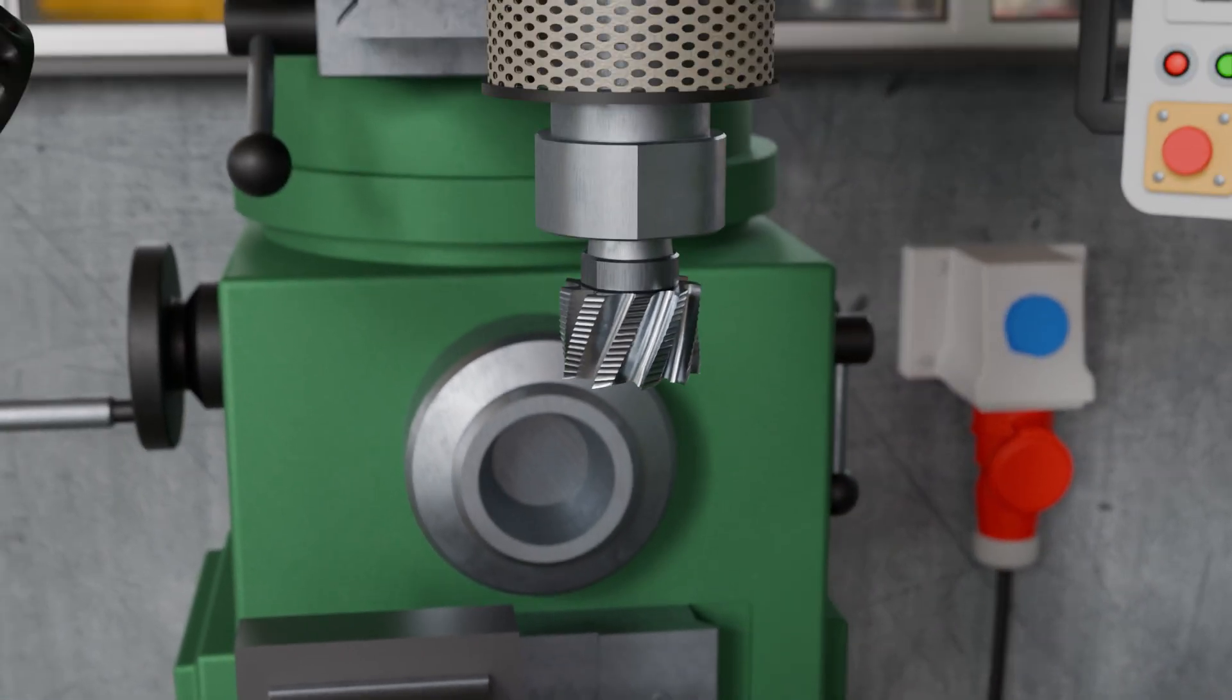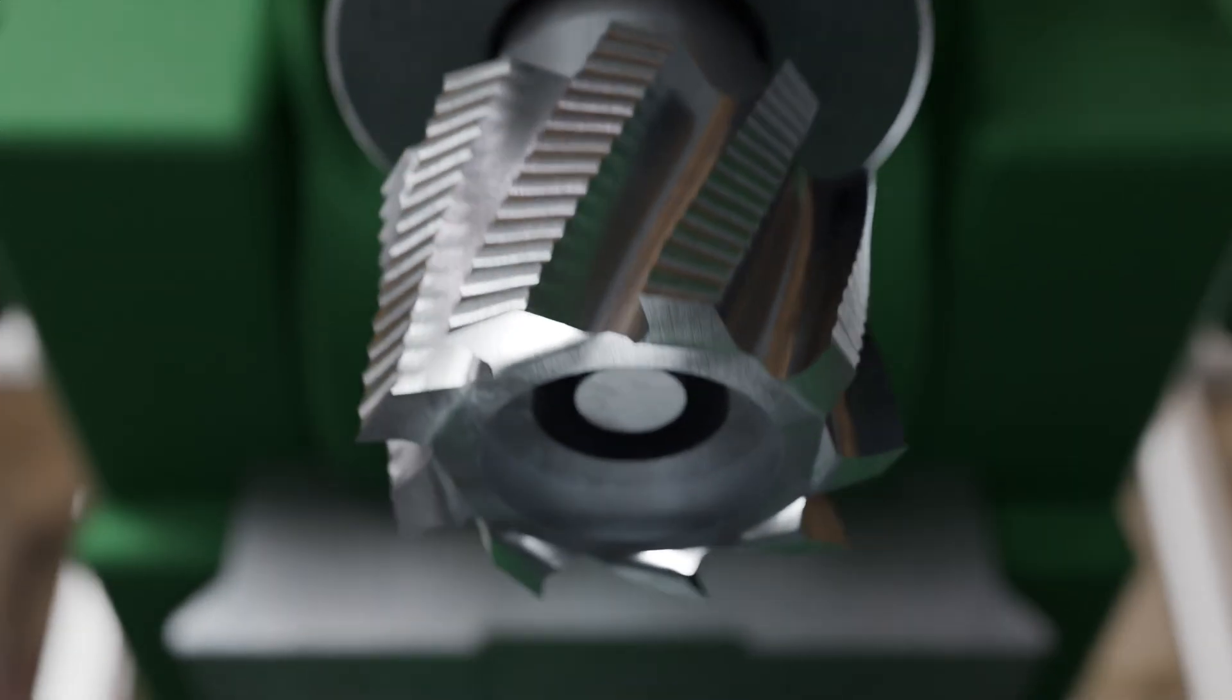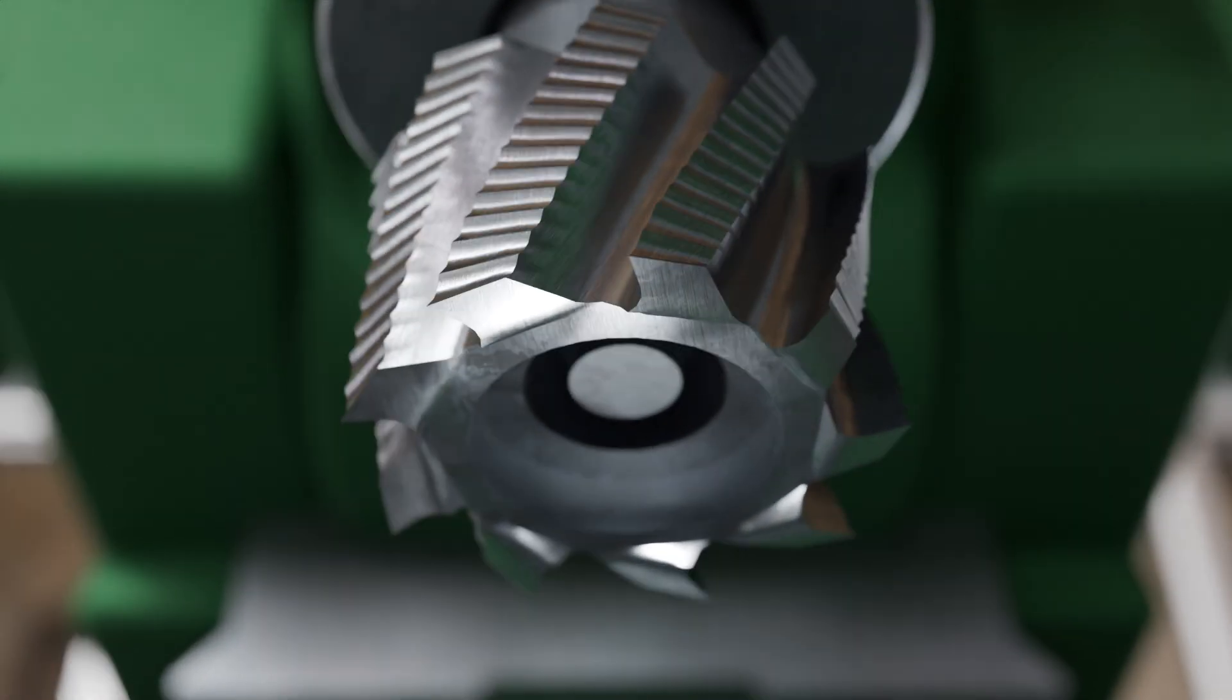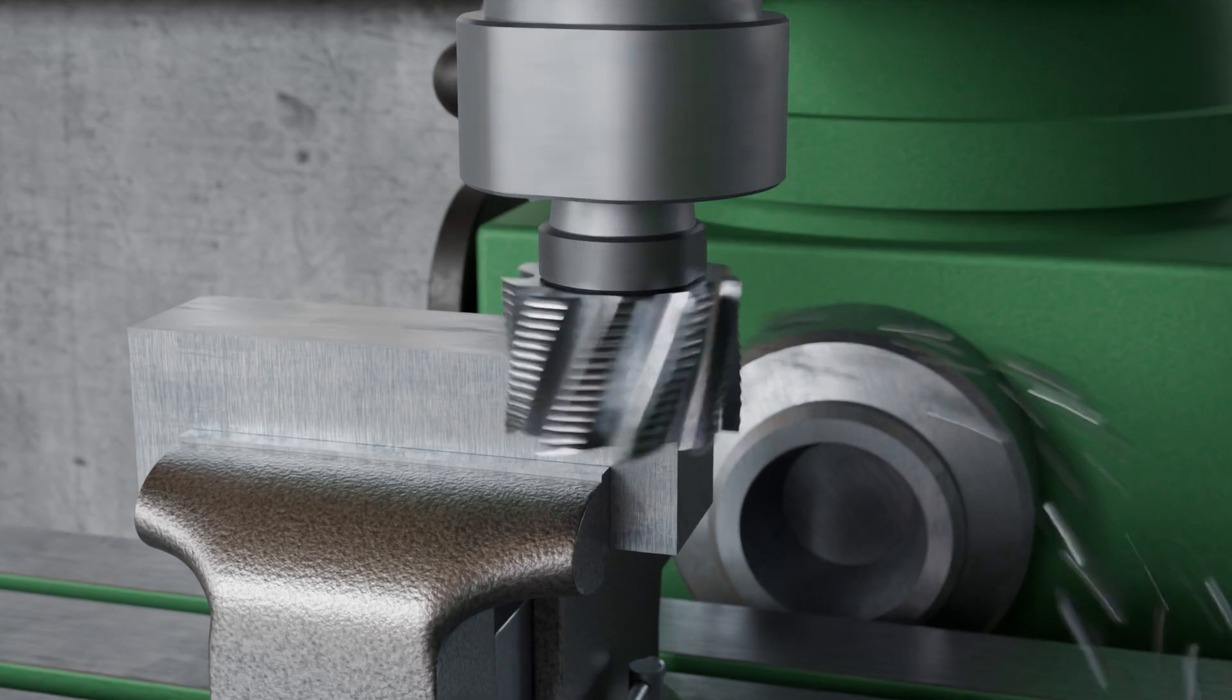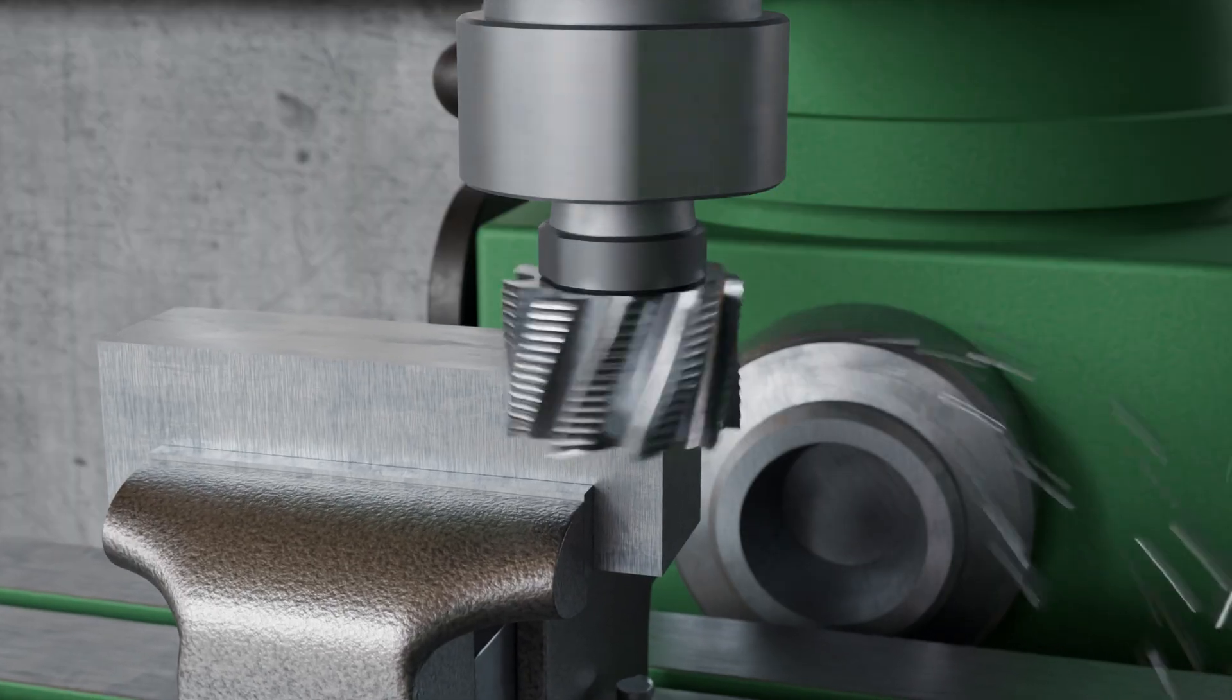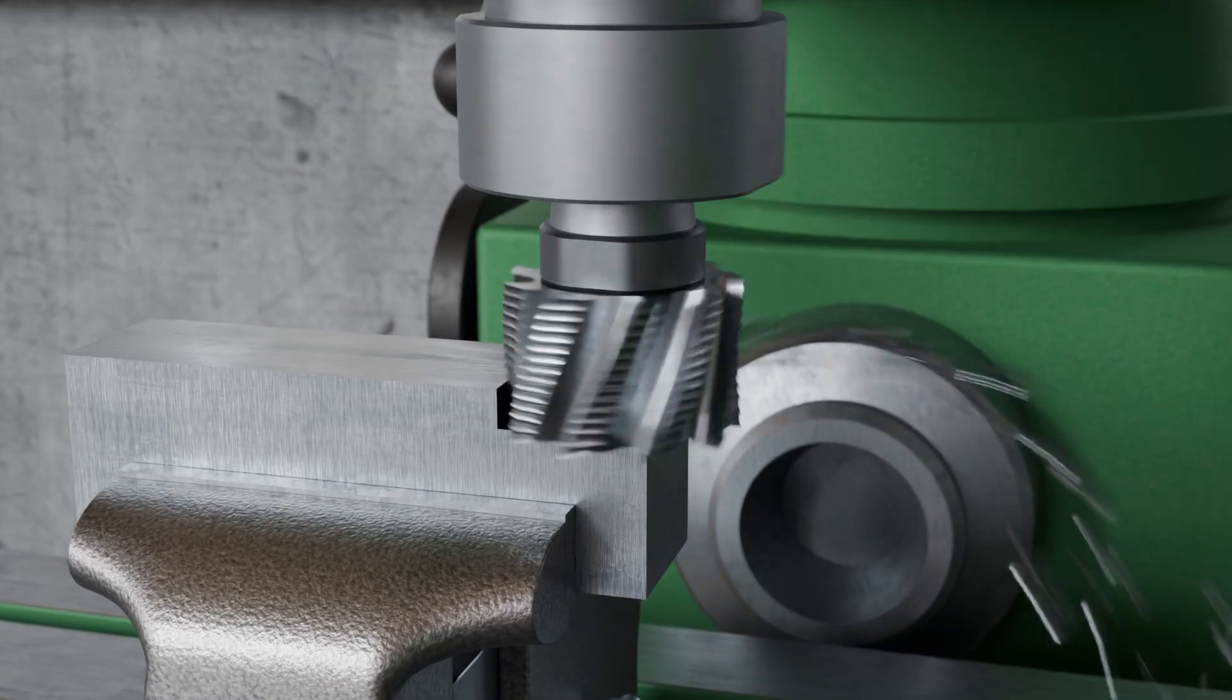Flat surfaces with higher surface quality can be produced using a face and peripheral cutter. As the name implies, this cutter type has cutting edges not only on the periphery but also on the end face. In this case, the cutter axis is no longer parallel but perpendicular to the cutting surface. The cutting action is also performed by the end face cutting edges, with the peripheral edges still contributing to material removal. This method is referred to as face peripheral milling.